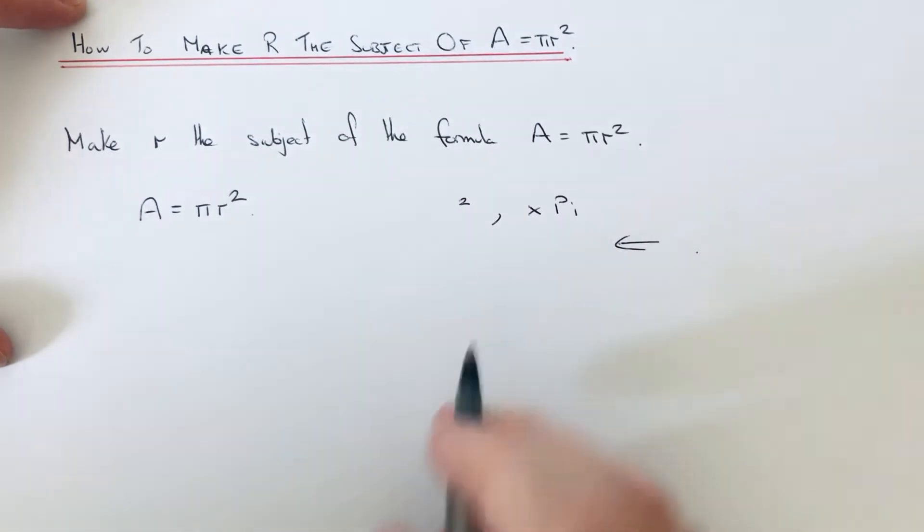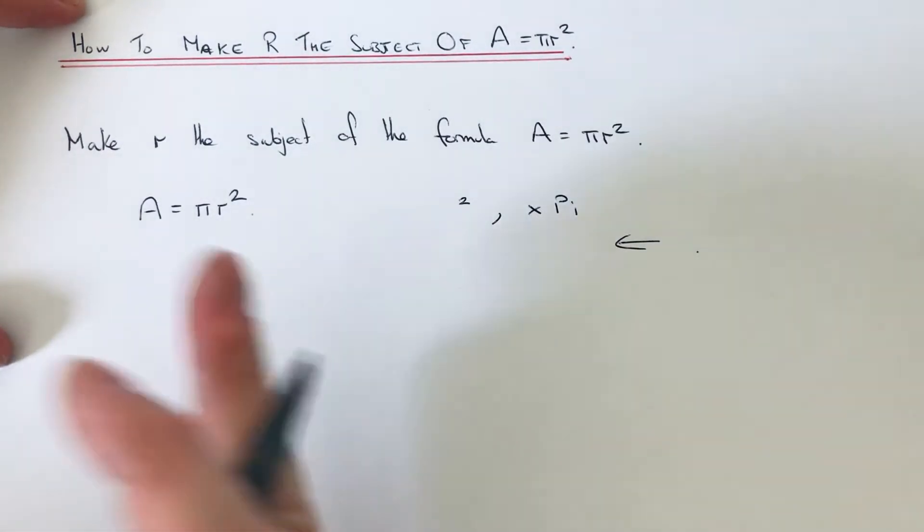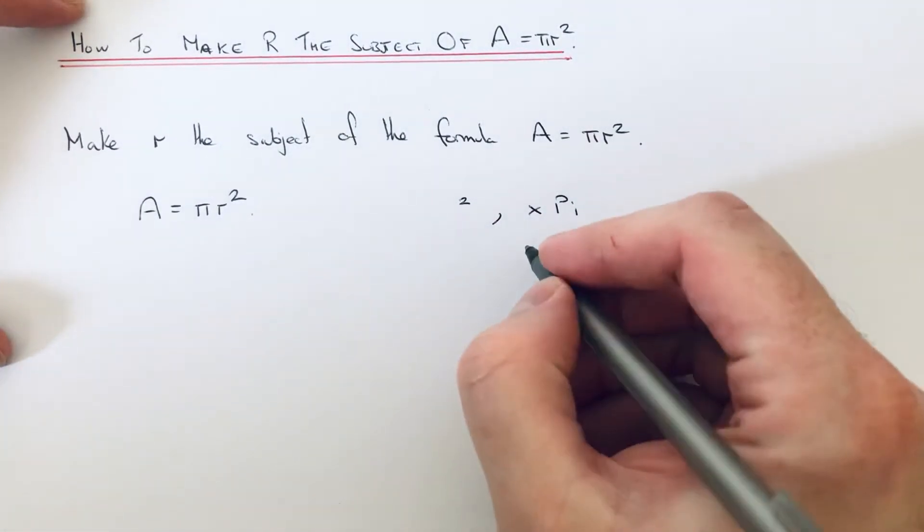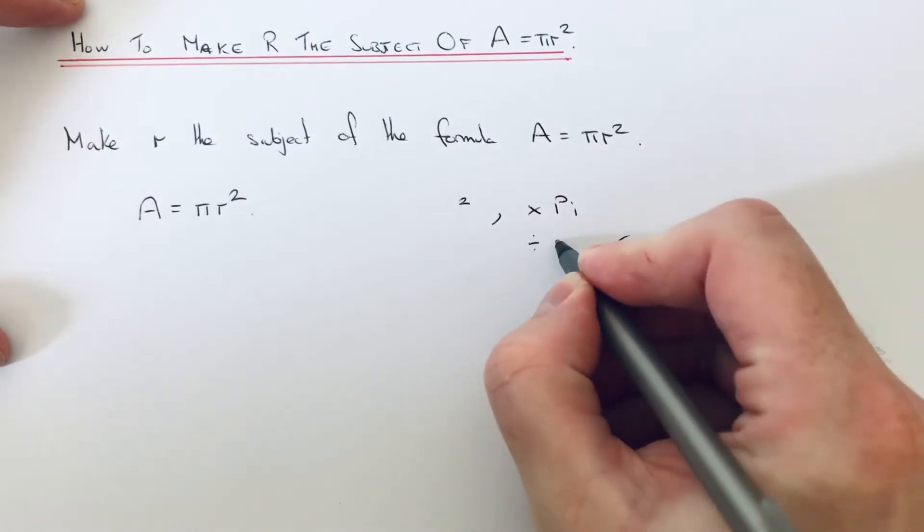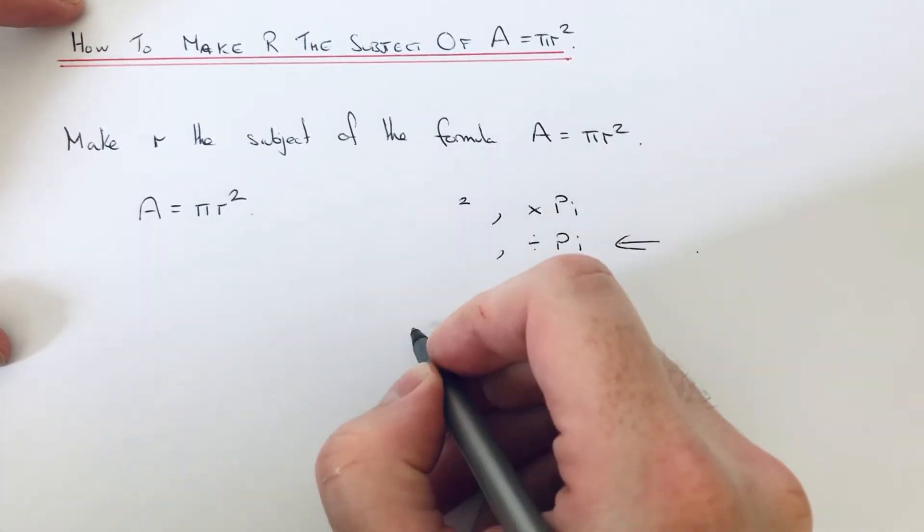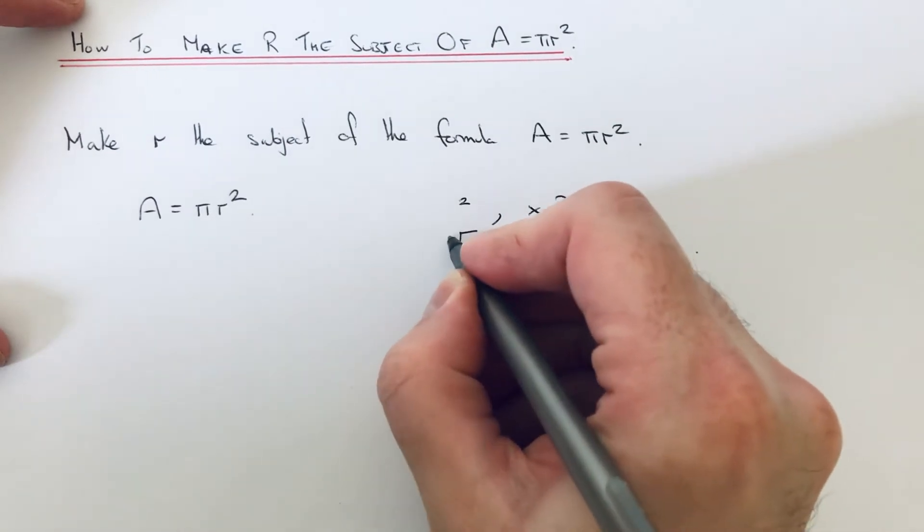What we need to do then is apply the inverses on the left hand side of the formula. So we need to divide by pi, and then the opposite to a square is a square root.